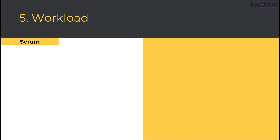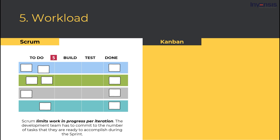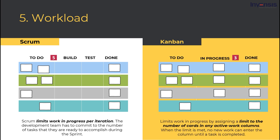Workload. Both Scrum and Kanban limit work-in-progress, just in different ways. Scrum limits work-in-progress per iteration — the development team commits to the number of tasks they are ready to accomplish during the sprint. For example, if the development team wants to complete all items in the in-progress section simultaneously, nothing prevents them from doing so. Kanban, on the other hand, assigns a limit to the number of cards in any active work column. When the limit is met, no new work can enter the column until a task is completed and moved to the next column. For example, a number three in the column header means there shouldn't be more than three items in the in-progress column at any time.